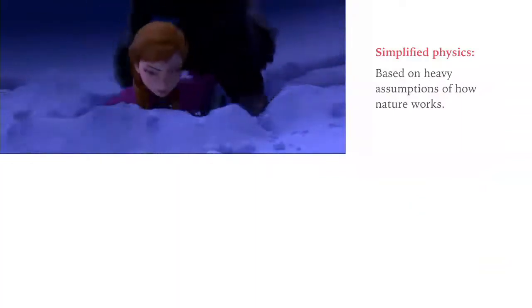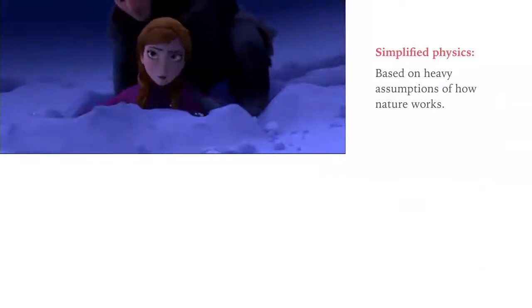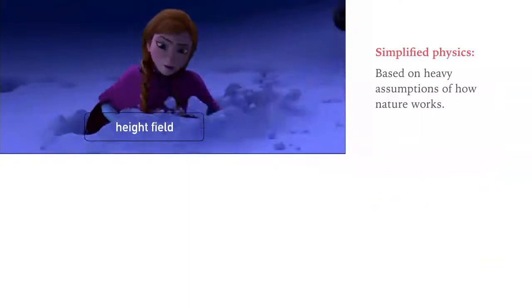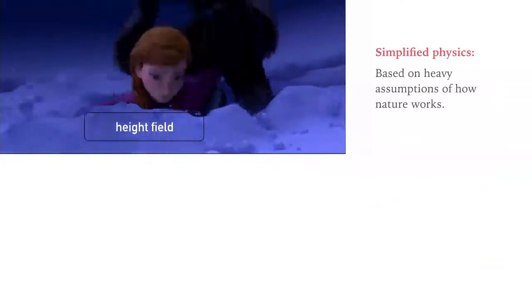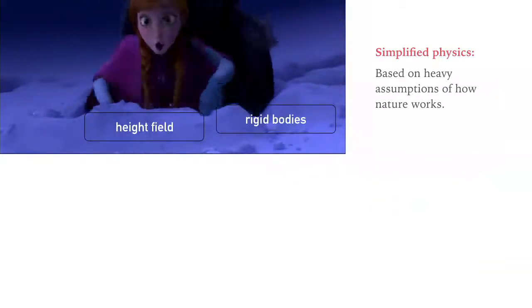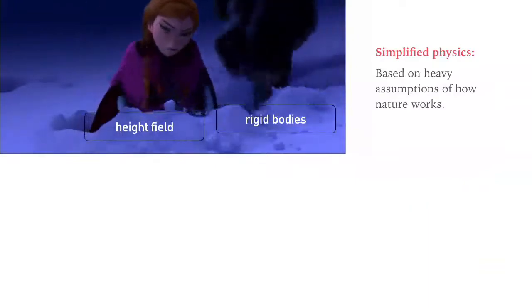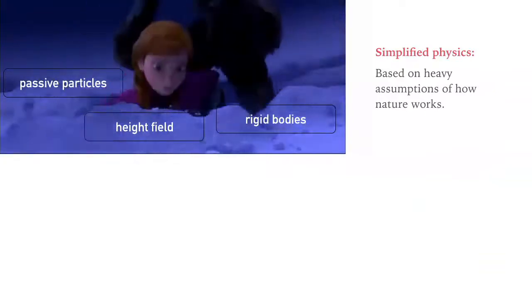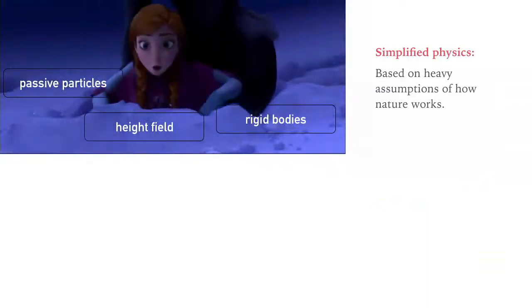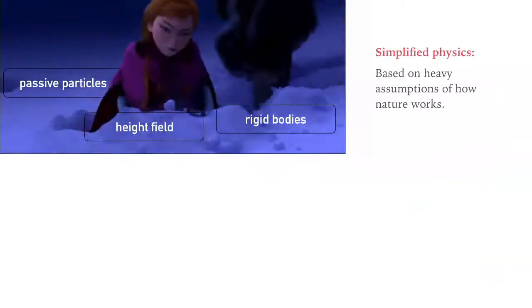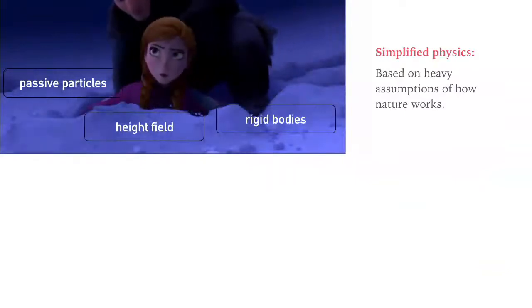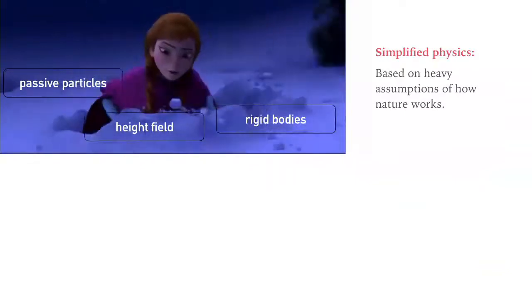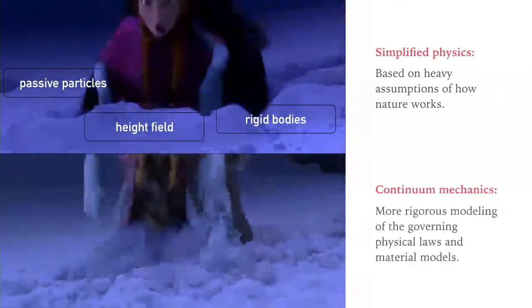In computer graphics and in the movie industry, simplified physics is often used — that's a joke about distinguishing us from computational scientists. For example, in this shot you can see height-field evolution to mimic snow dynamics. The character is being dragged out of the snow, but it's not very realistic. People add rigid body dynamics to mimic chunks, but that still looks like rock, not snow. Disney also adds passive particles advected under velocity fields to mimic the powdery effect, which is truly non-physical.